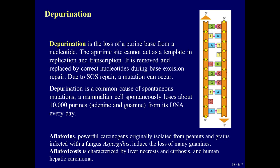Aflatoxins, powerful carcinogens originally isolated from peanuts and grains infected with the fungus Aspergillus, induce the loss of many guanines. Aflatoxicosis is characterized by liver necrosis and cirrhosis and human hepatic carcinoma.